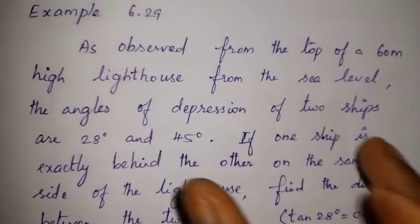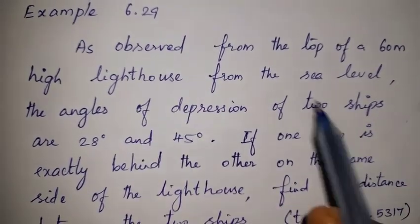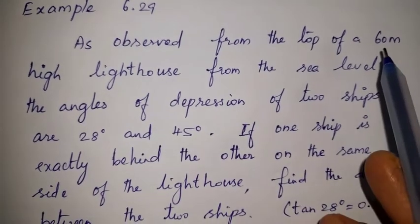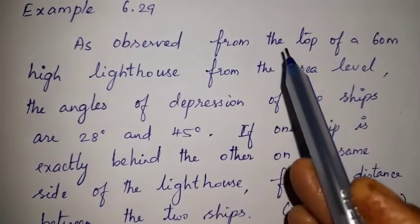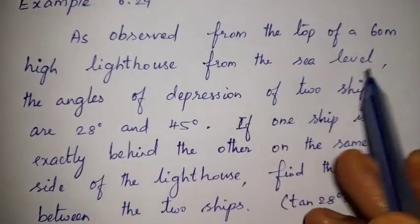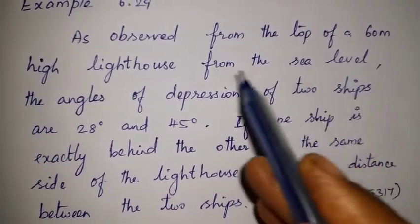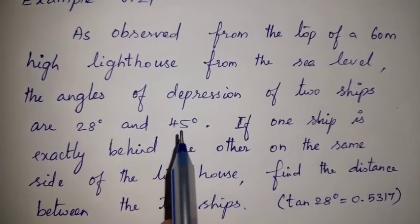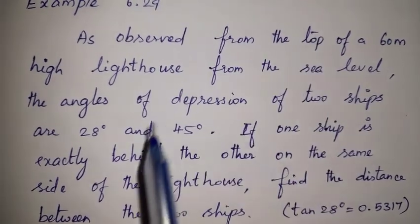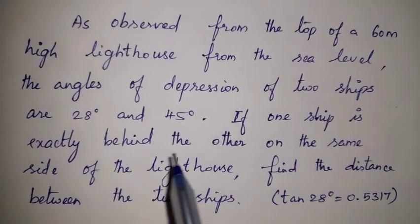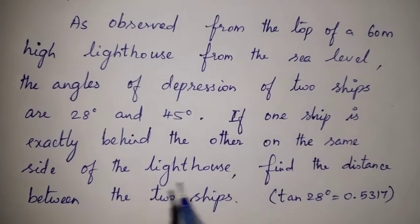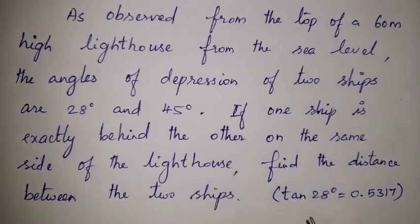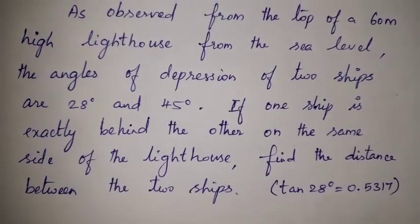In the question, the height of the lighthouse is 60 meters, as observed from the top. From the sea level there are two ships, one exactly behind the other on the same side of the lighthouse — either the left side or the right side. We need to find the distance between the two ships. First, let's draw the diagram at ground level, which is the sea level.